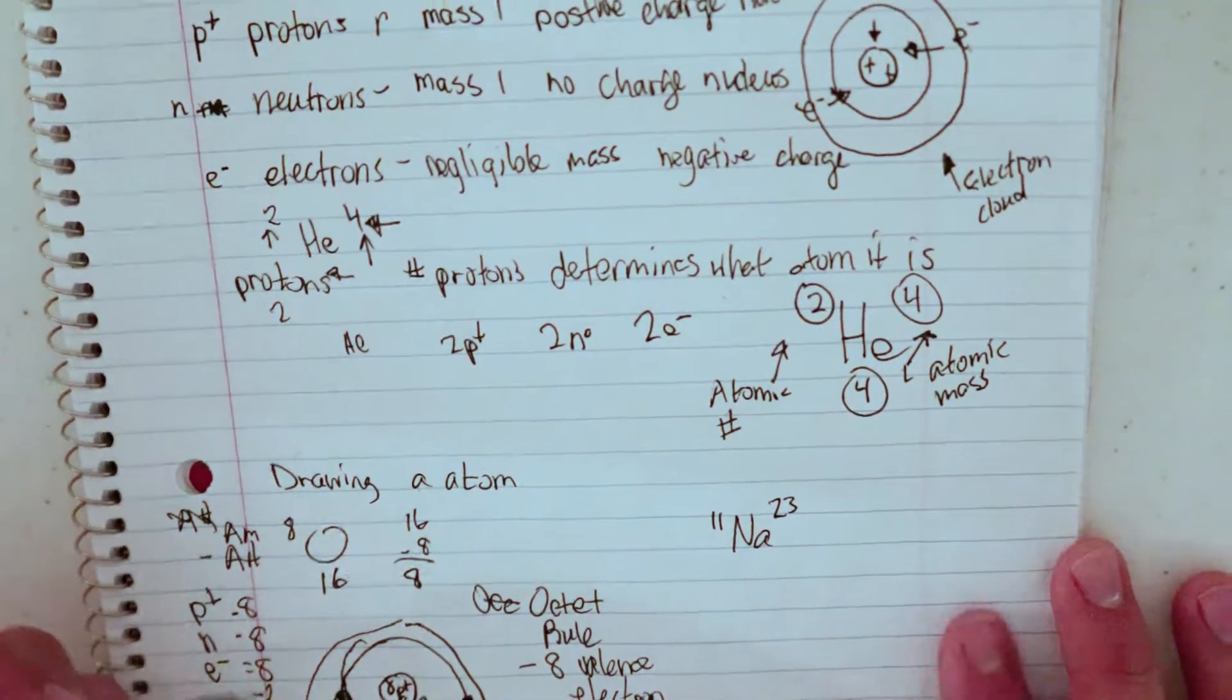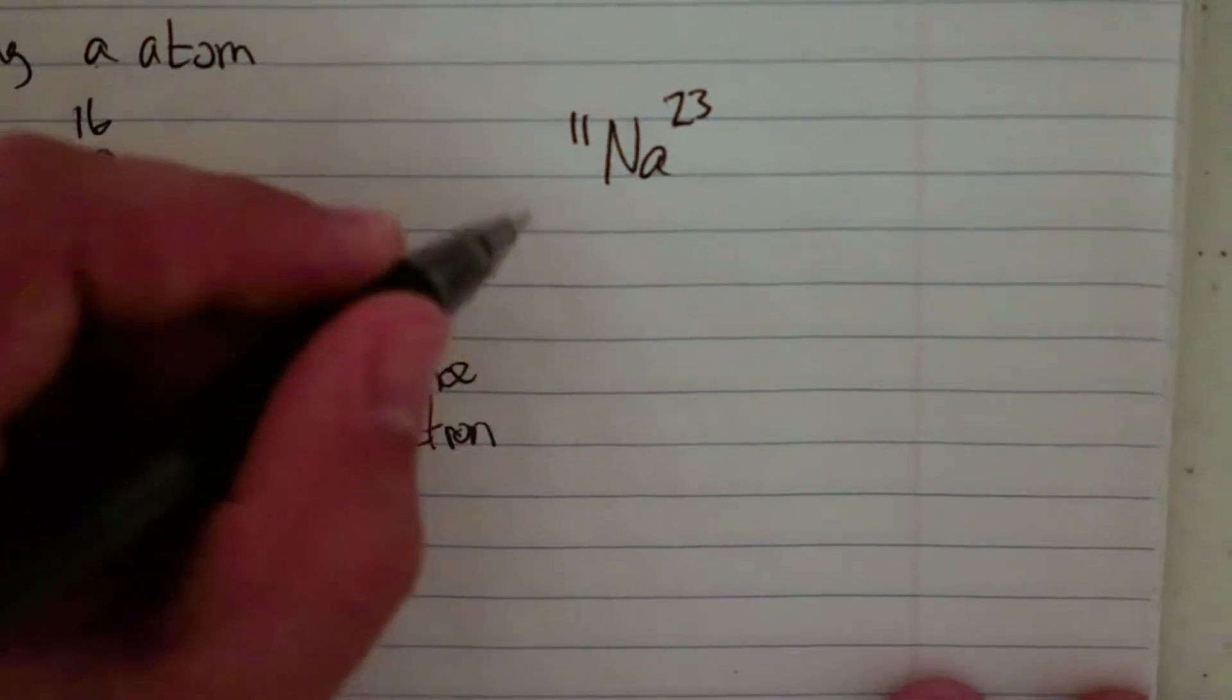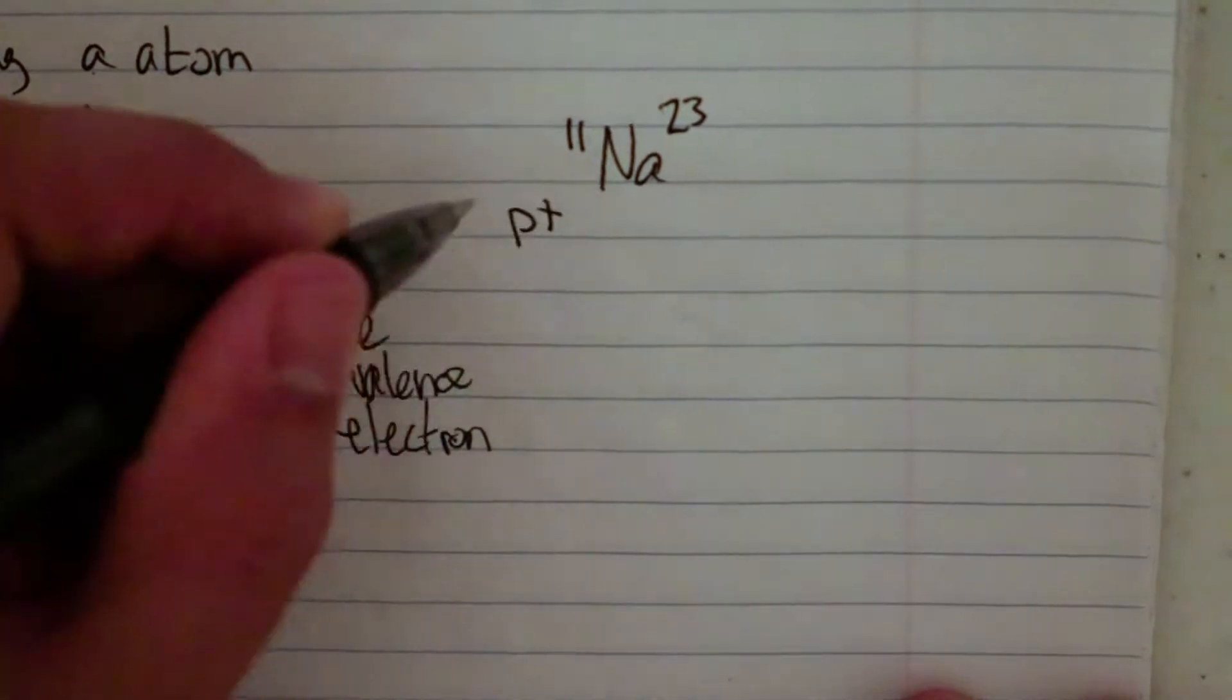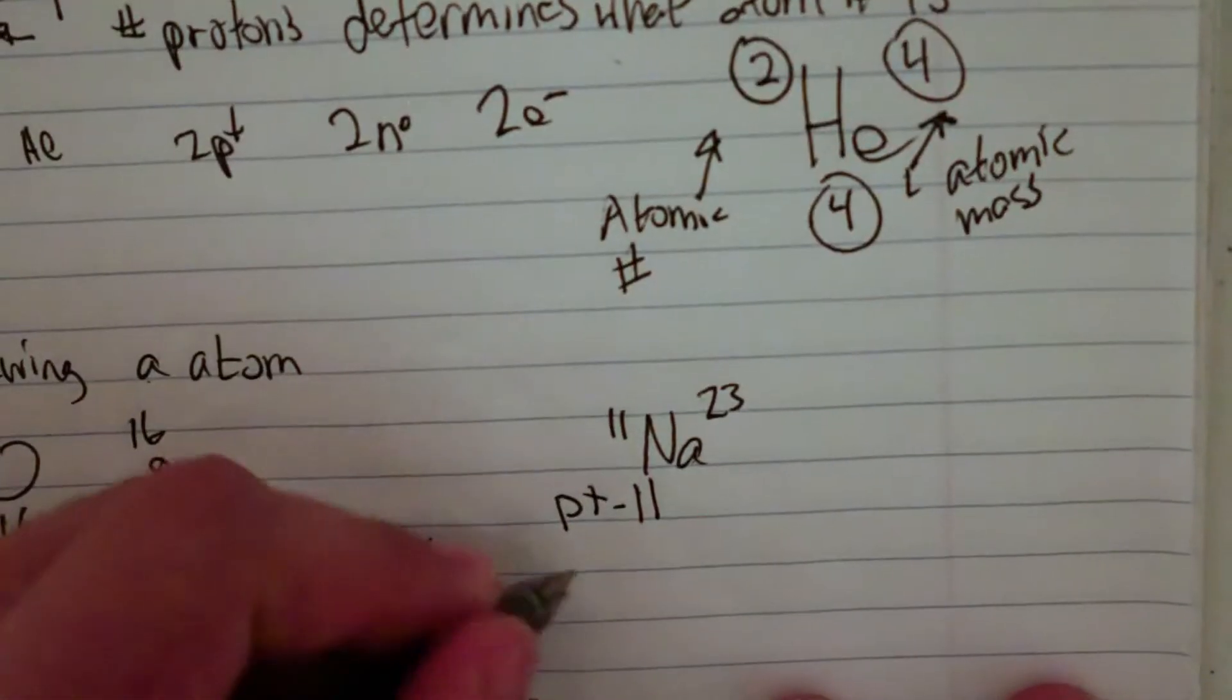So sodium, to draw a Bohr model of sodium, first thing I want to do is number of protons, neutrons, and electrons. So the number of protons is 11, because that's my atomic number, 11.